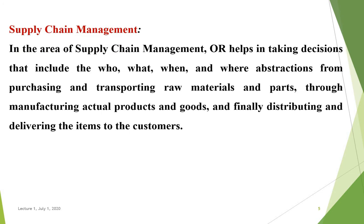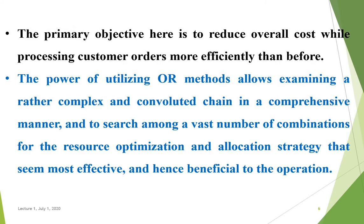Next is supply chain management. In this area, OR helps in taking decisions that include the who, what, when, and where, from purchasing and transporting raw materials and parts through manufacturing actual products and goods, and finally distributing and delivering the item to the customer. The primary objective here is to reduce overall cost while processing customer orders more effectively and efficiently.